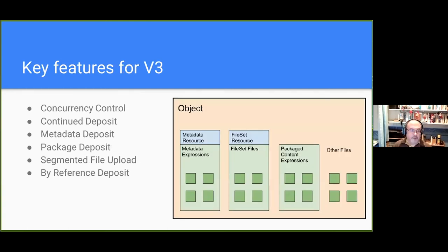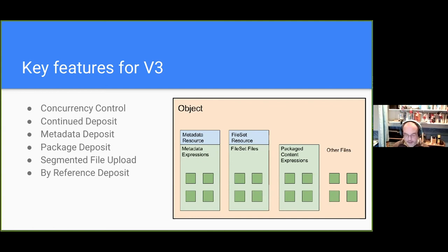The basic underlying object model for what SWORD is moving around doesn't change from previous versions, so in terms of implementing it in repositories that already support SWORD 2, it's not a major change in terms of any underlying architecture. The key features of version three that I'll go over in the next slides are just listed there.